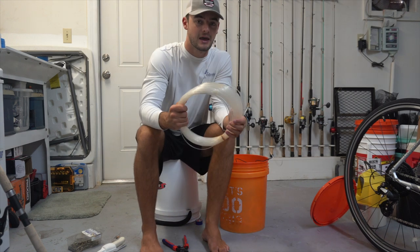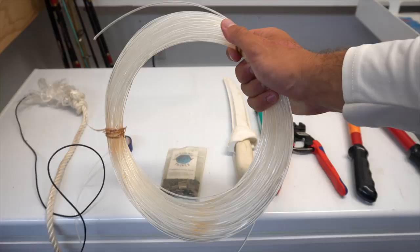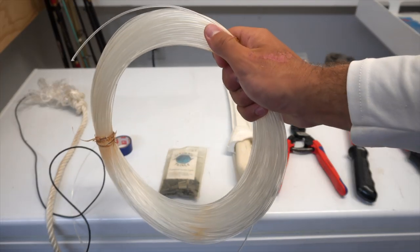Another thing you're going to need is some heavy mono for the leader on this hand line. So this right here is 500 pound mono and it's going to be perfect for this.